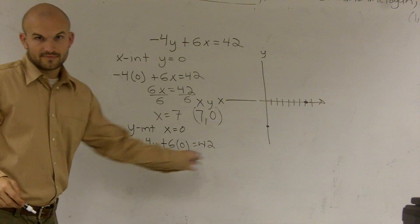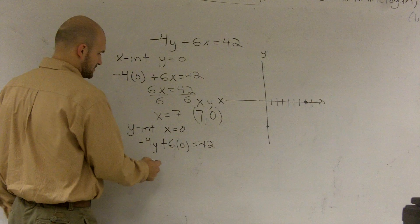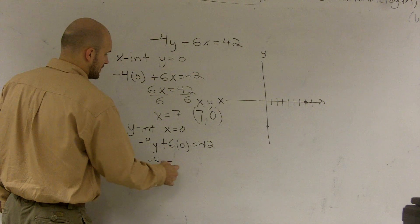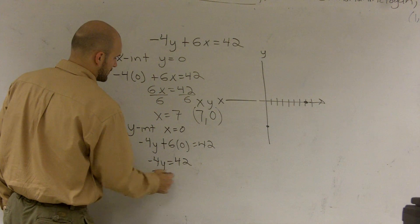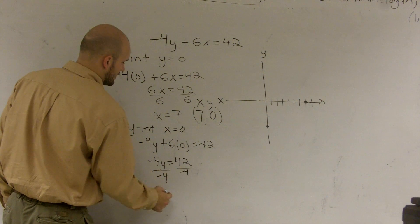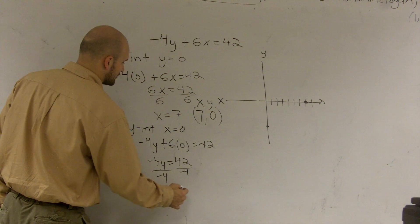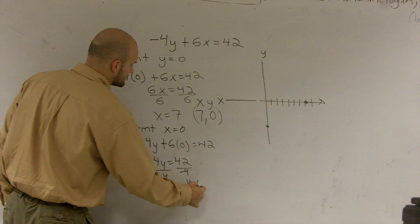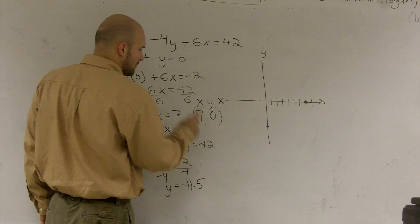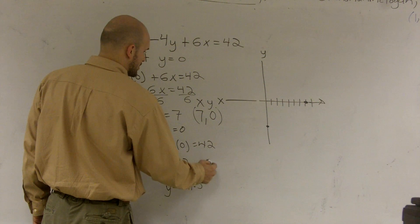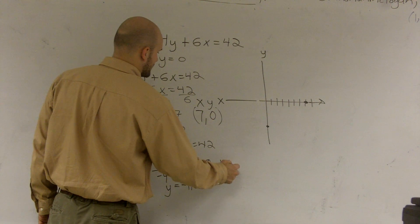Well, obviously, this is going to get to 0. So I get a negative 4y equals 42. Divide by negative 4. And I get y equals a negative 11.5. So therefore, my y-intercept is 0 comma a negative 11.5.